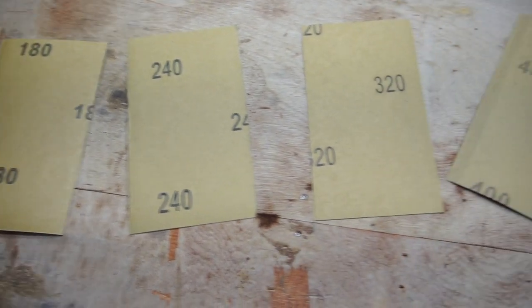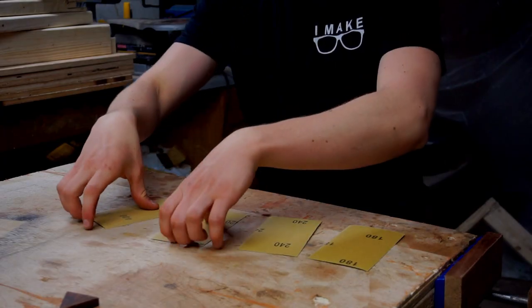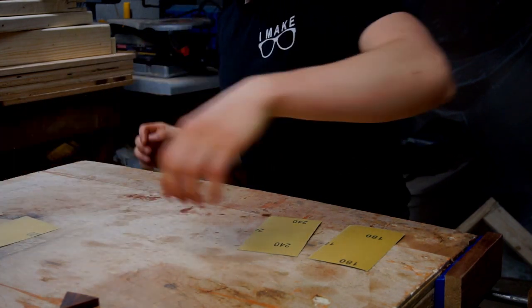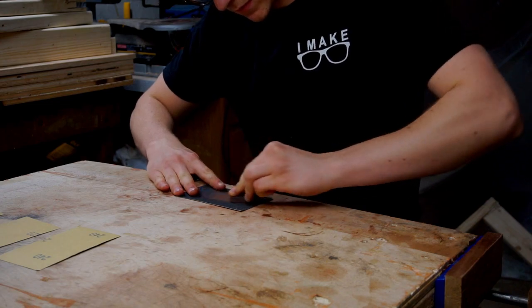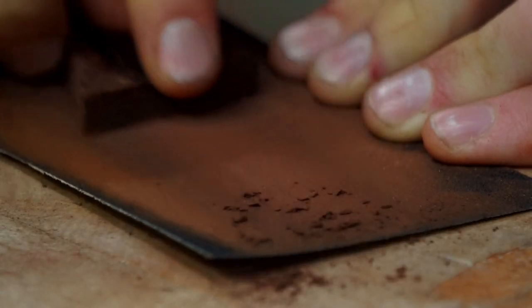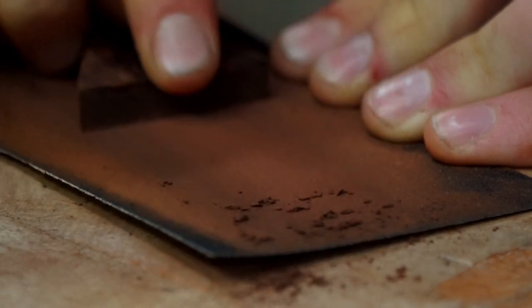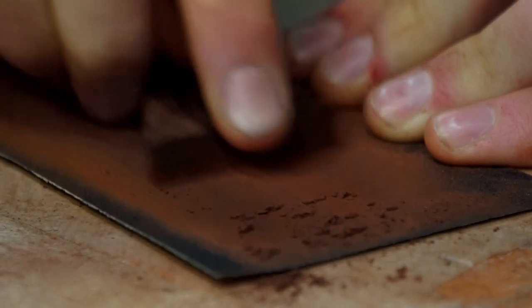Now it's time for the final sanding. I chose to sand from 180 grit all the way up to 400 grit. You can see how quickly the sandpaper gets clogged. It looks like that, only after about three minutes of sanding.